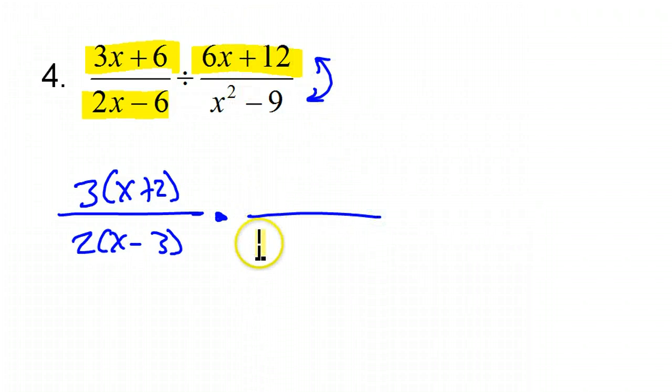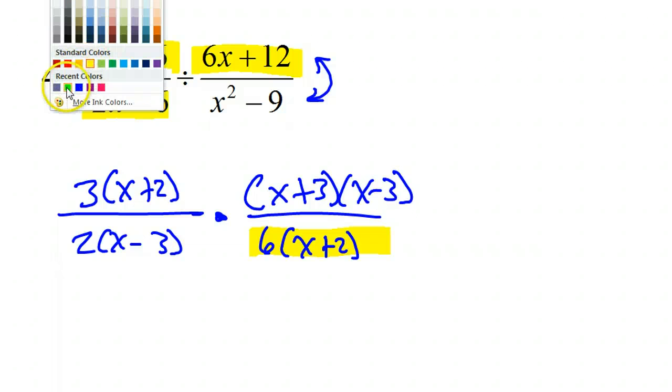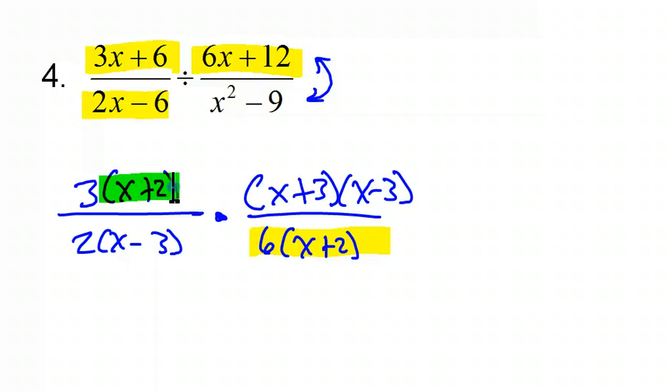So, 3 times x plus 2, alright GCF, got to do that, 2 times x minus 3. I am going to go ahead and do this reciprocal right now. So, see this yellow? Just to help guide your eye, that yellow is down here now. So, I think you can understand what I'm doing. So, we have the 6, and that's going to be x plus 2. I went ahead and did the reciprocal. Notice it's multiplication now. Now this is going to be x plus 3 times x minus 3.